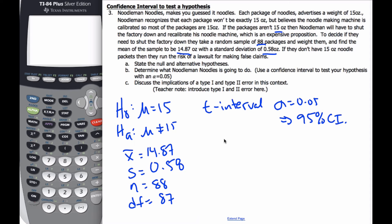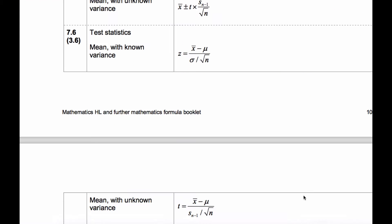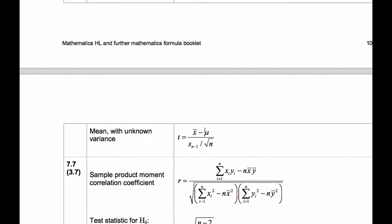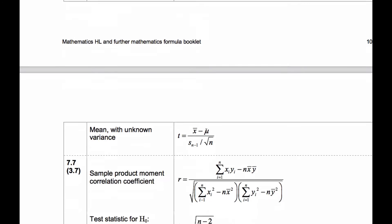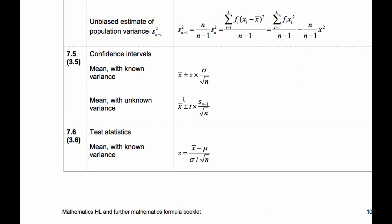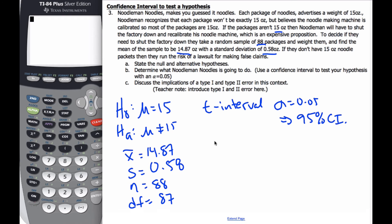I know it's a confidence interval, so from our formula booklet we know that our confidence interval is x bar plus or minus t star times s over the square root of n.